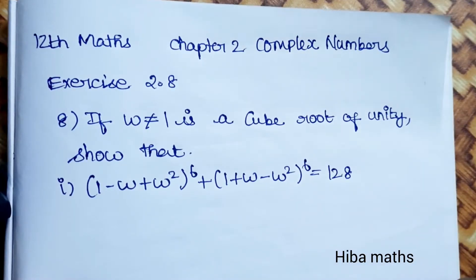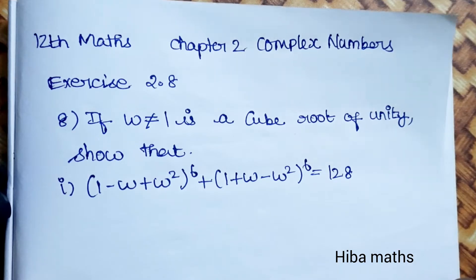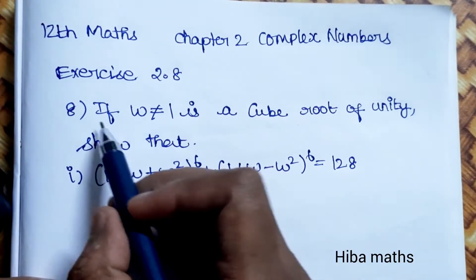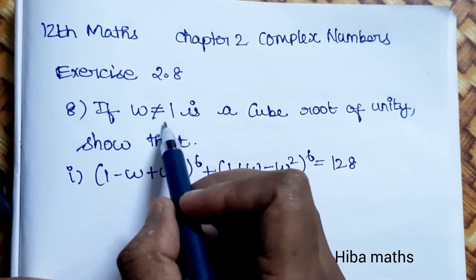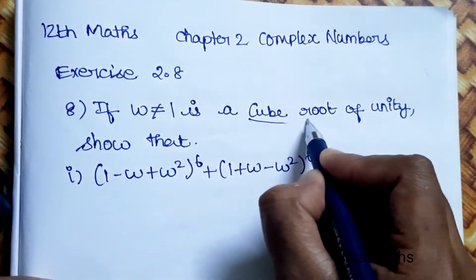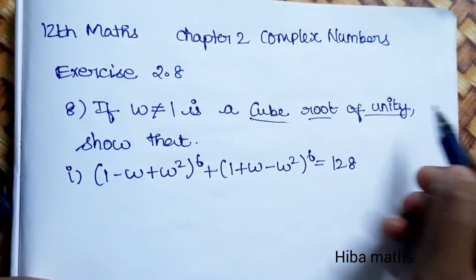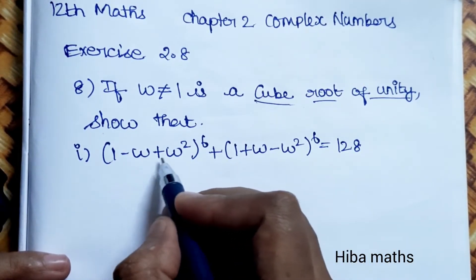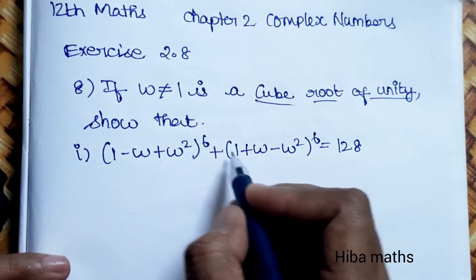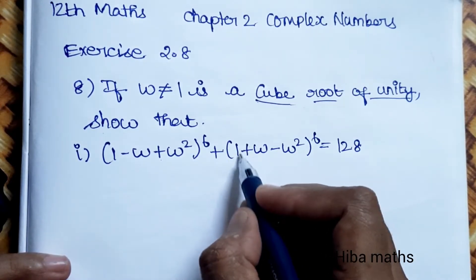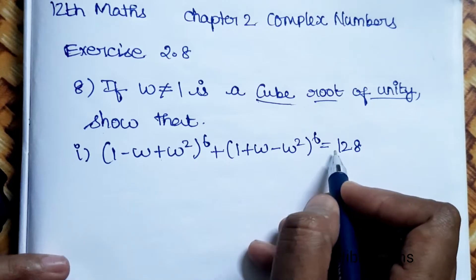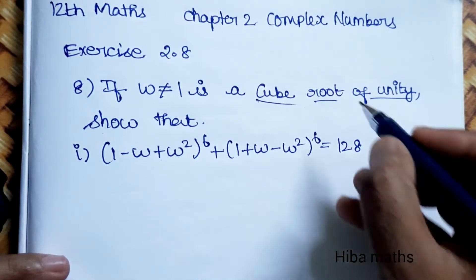Hello students, welcome to Hibamax 12 Standard, Chapter 2 Complex Numbers, Exercise 2.8, 8th question. If omega is not equal to 1, and is a cube root of unity, show that (1 - ω + ω²)^6 + (1 + ω - ω²)^6 is equal to 128.